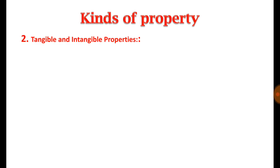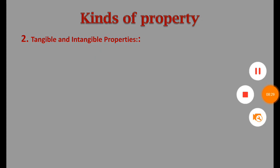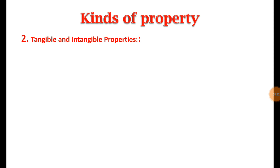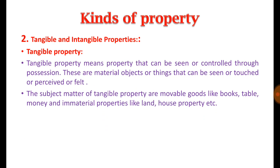The second kind of property is tangible and intangible property. This classification is made on the basis of tangibility. Tangible property means the property which can be seen or touched — this is the general rule by which we identify whether a particular property is tangible. Tangible property means that which can be seen or controlled through possession, and all material objects perceivable by touch or sight are subject matter of tangible properties.